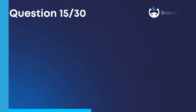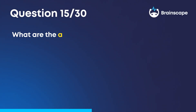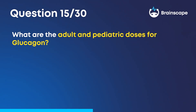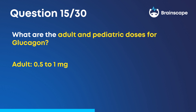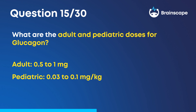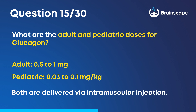Question 15. What are the adult and pediatric doses for glucagon? For adults, it's 0.5 to 1 milligrams. For pediatric patients, it's 0.03 to 0.1 milligrams per kilogram. Both are delivered via intramuscular injection.